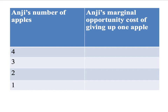Let's start off with our seller. Her name's going to be Anji, and she's going to have four apples to start with. We want to ask: what is Anji's marginal opportunity cost of giving up one apple? That's going to depend which apple it is. So we're going to ask what is Anji's marginal cost of giving up one apple when she still has three apples.